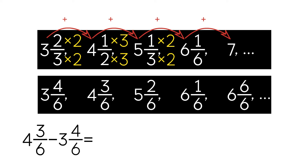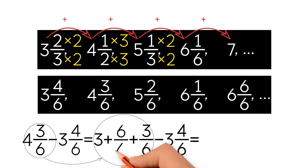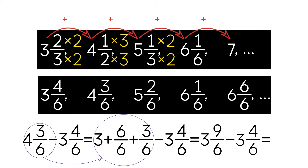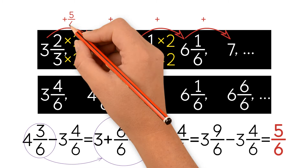But we run into a small problem — we can't subtract 4 sixths from 3 sixths, so we have to regroup. Instead of 4, we can write 3 plus 1, and instead of 1, we can write 6 over 6. So now our mixed number 4 and 3 over 6 turns into 3 and 9 over 6. Now we can subtract: 3 and 9 over 6 minus 3 and 4 over 6 equals 5 over 6.